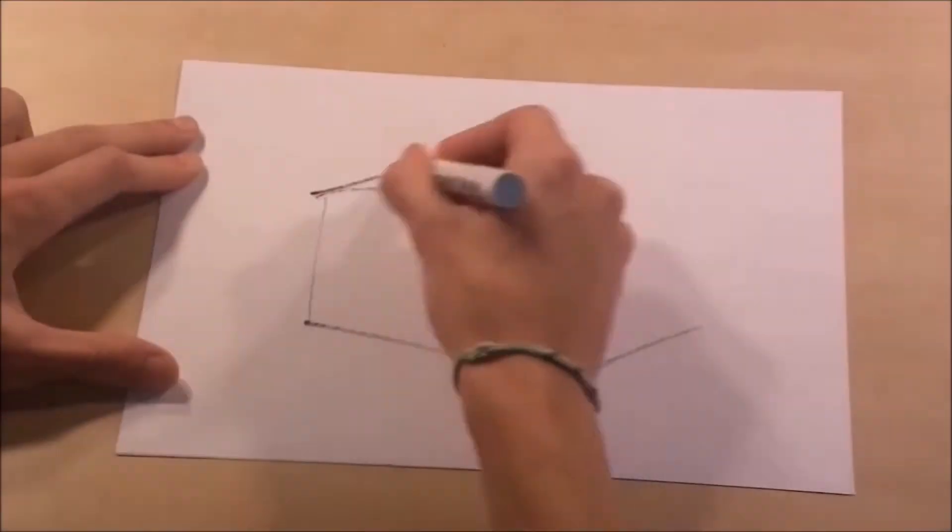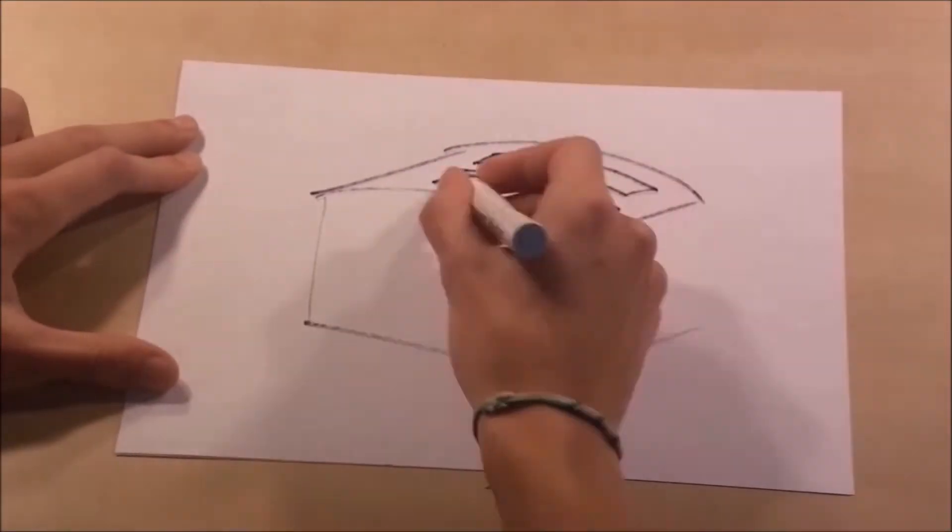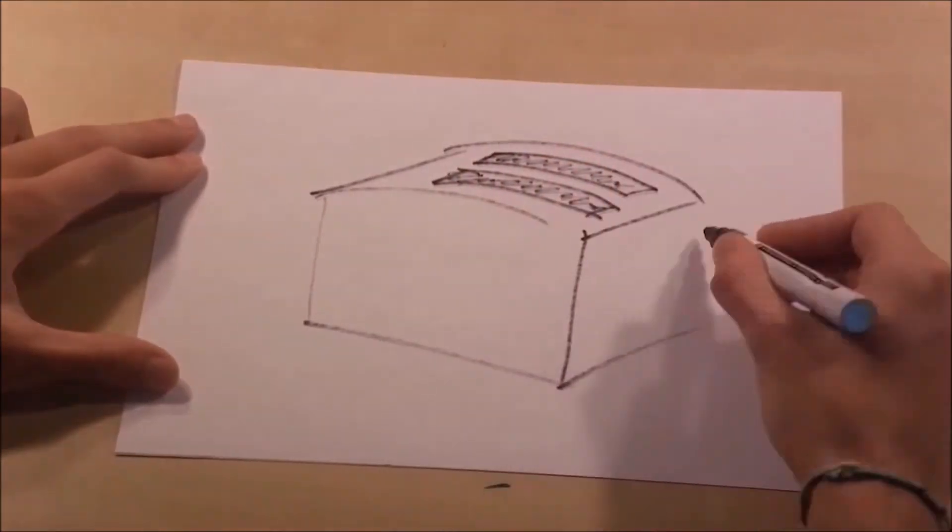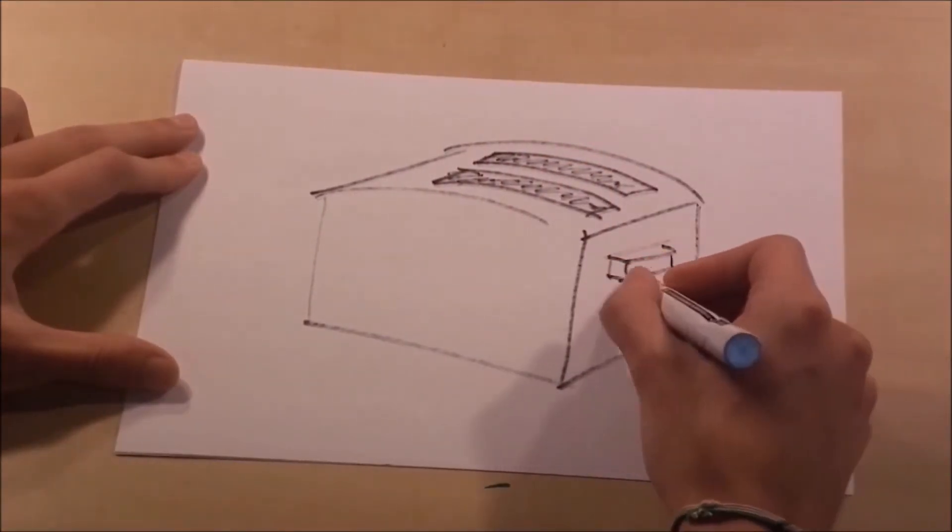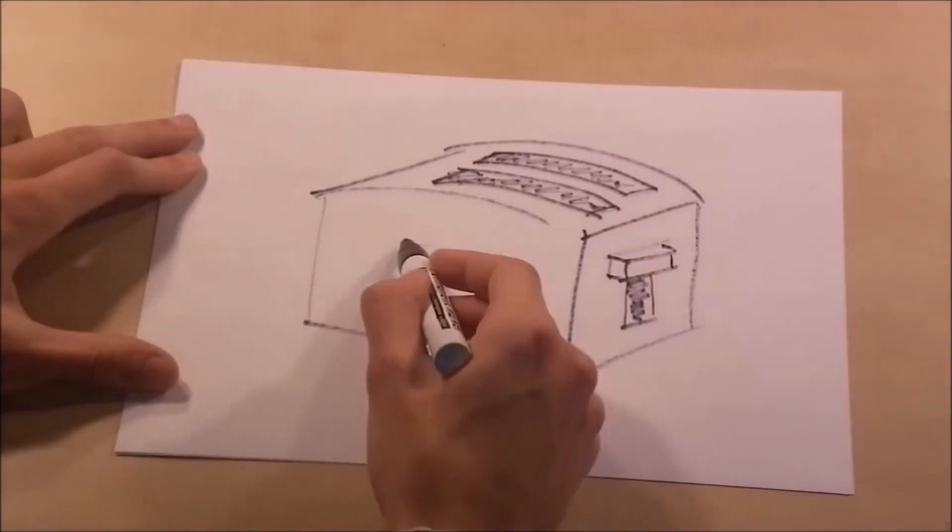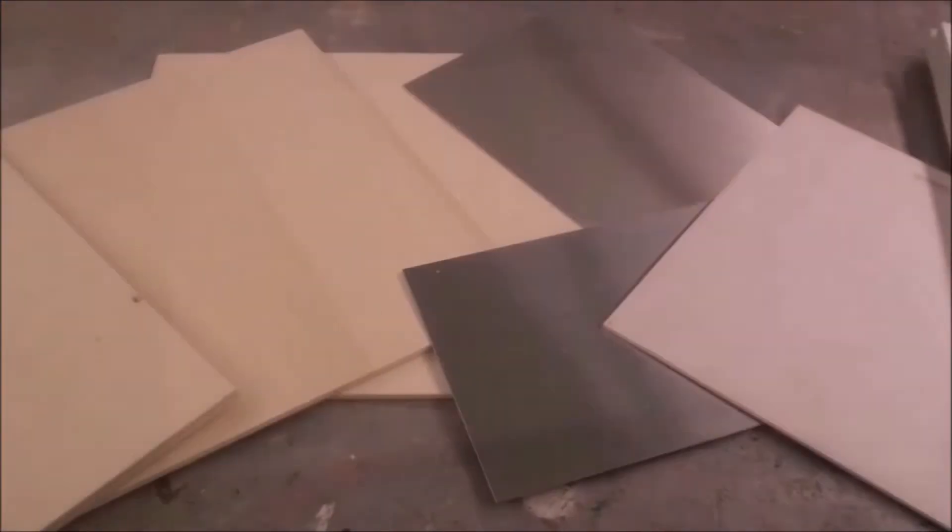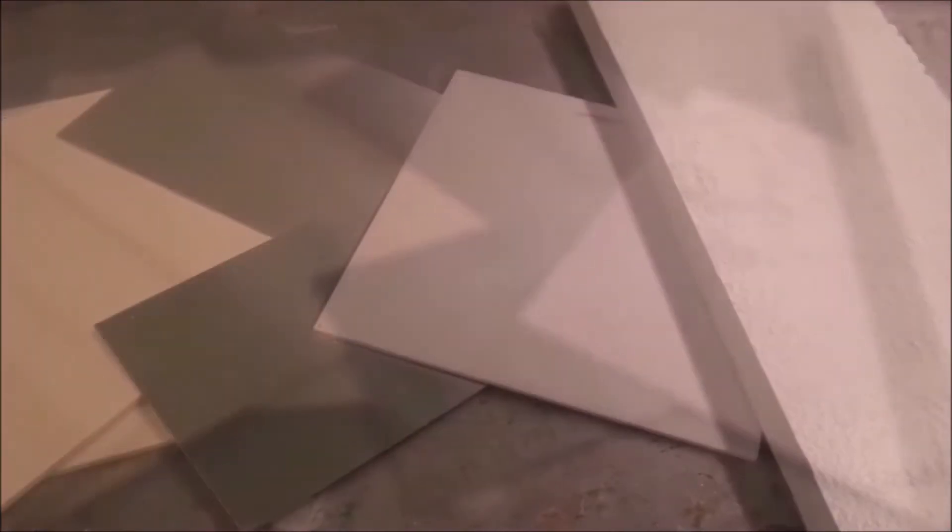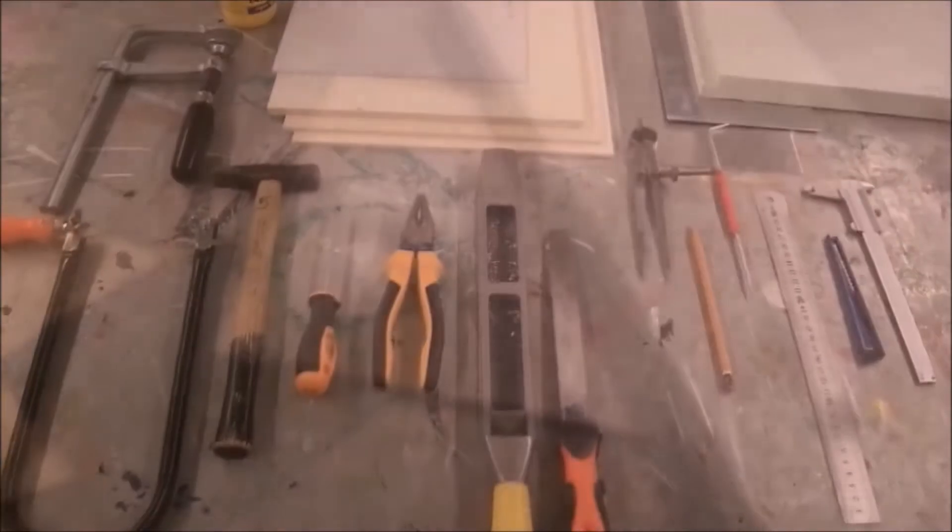When you've determined the goal of your prototype, you first need to make a plan. You choose your own materials and tools in order to achieve your goal as directly as possible. We prefer to use materials that are easily available, accessible, and easy to process with the available tools.